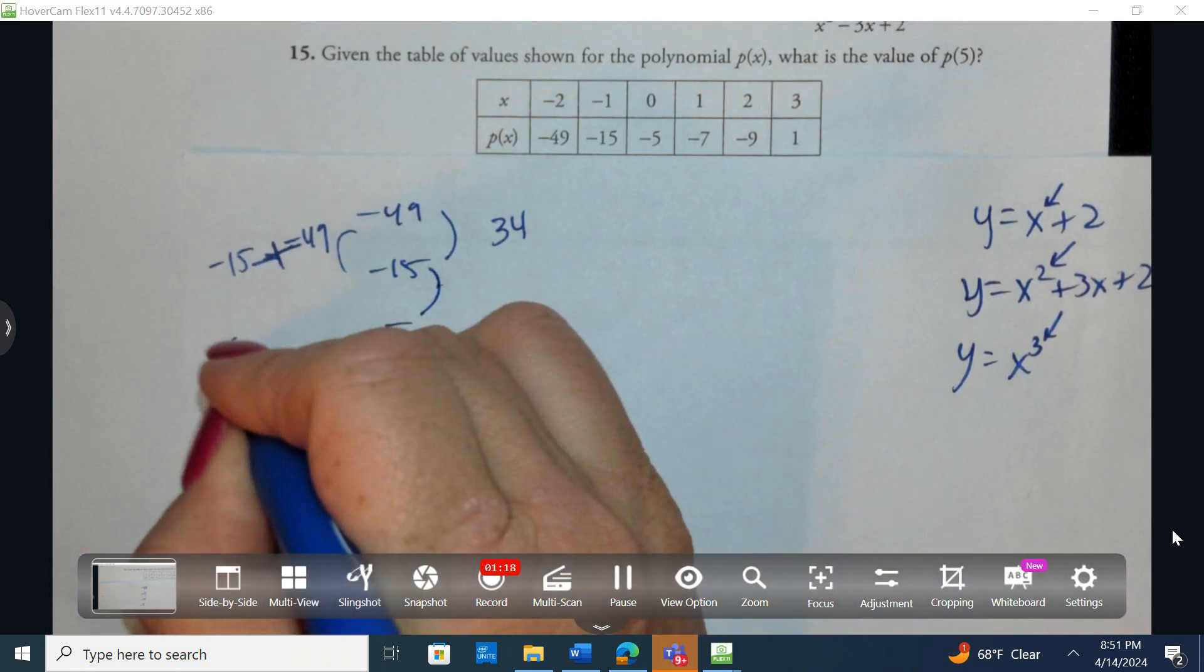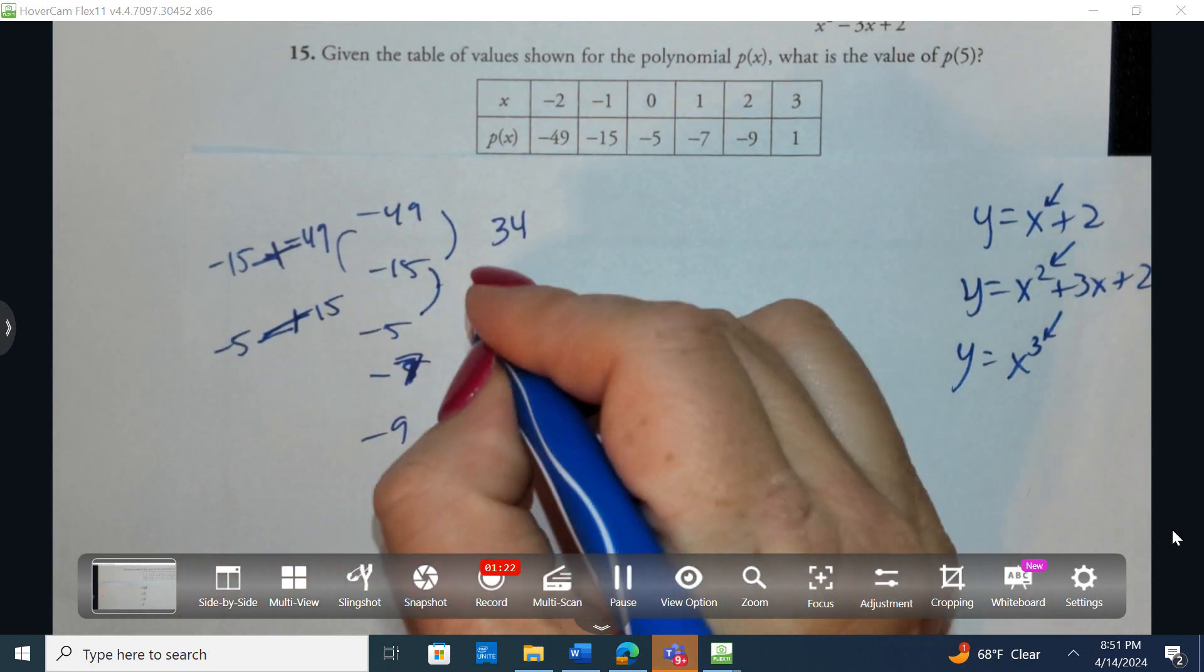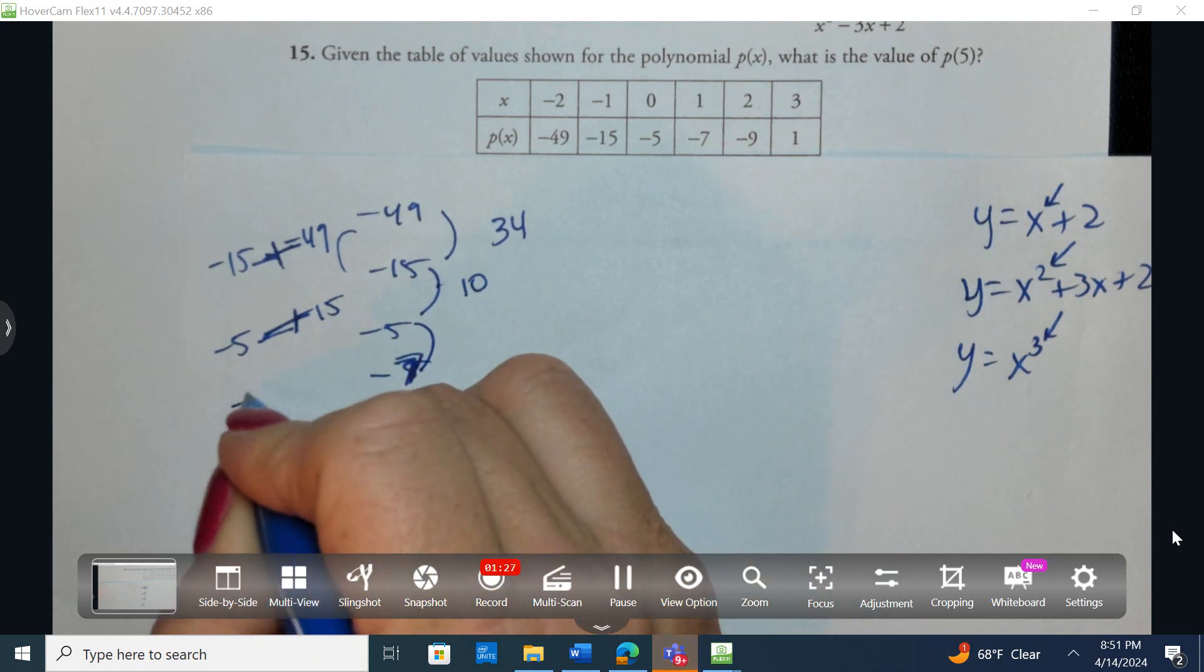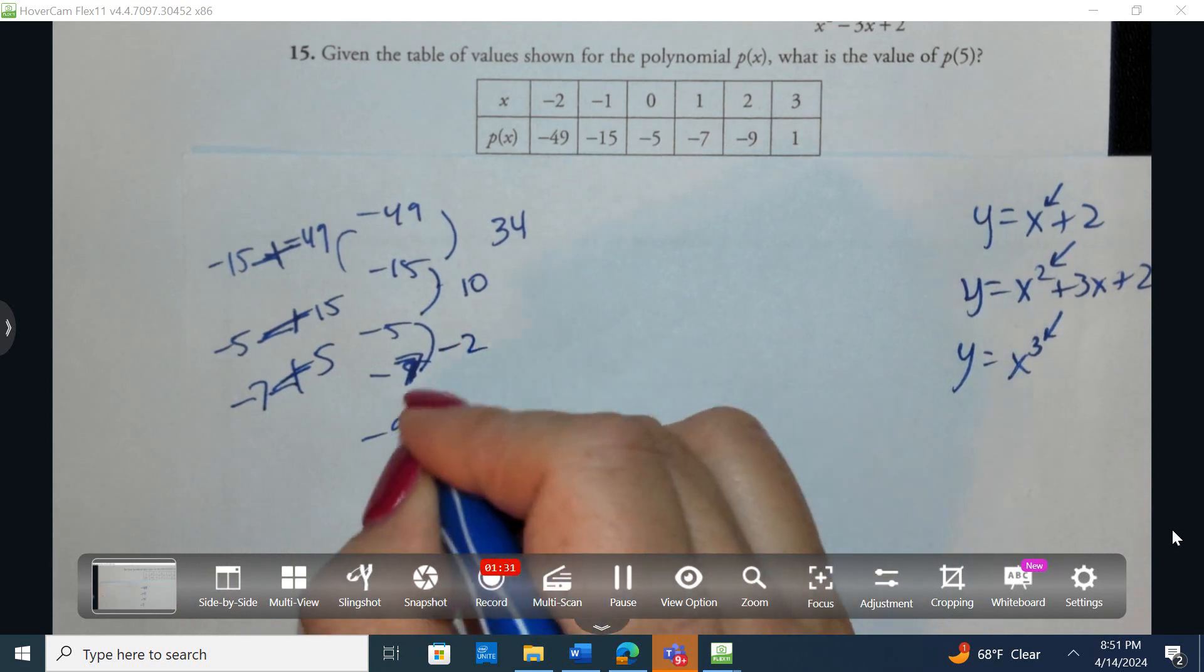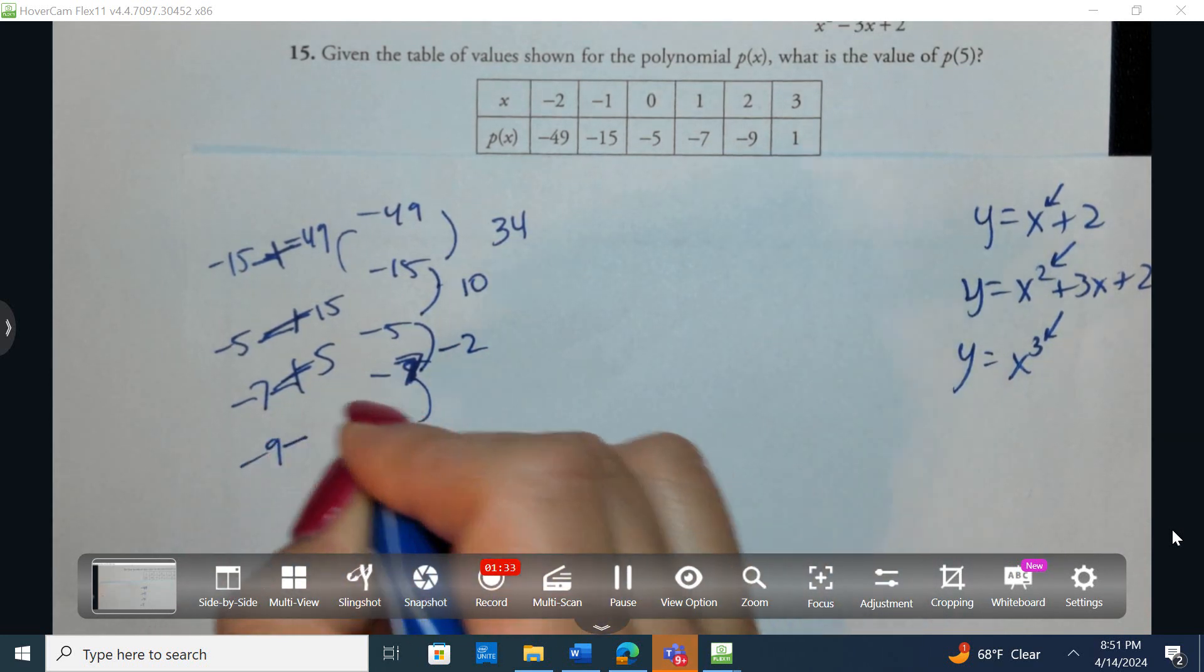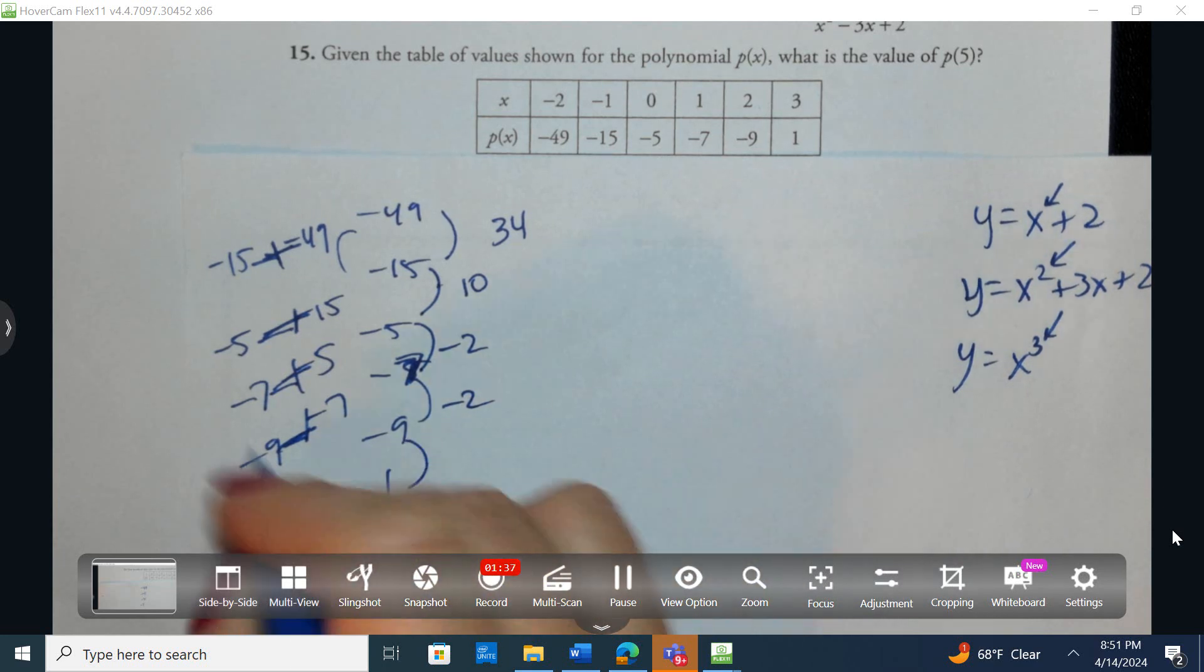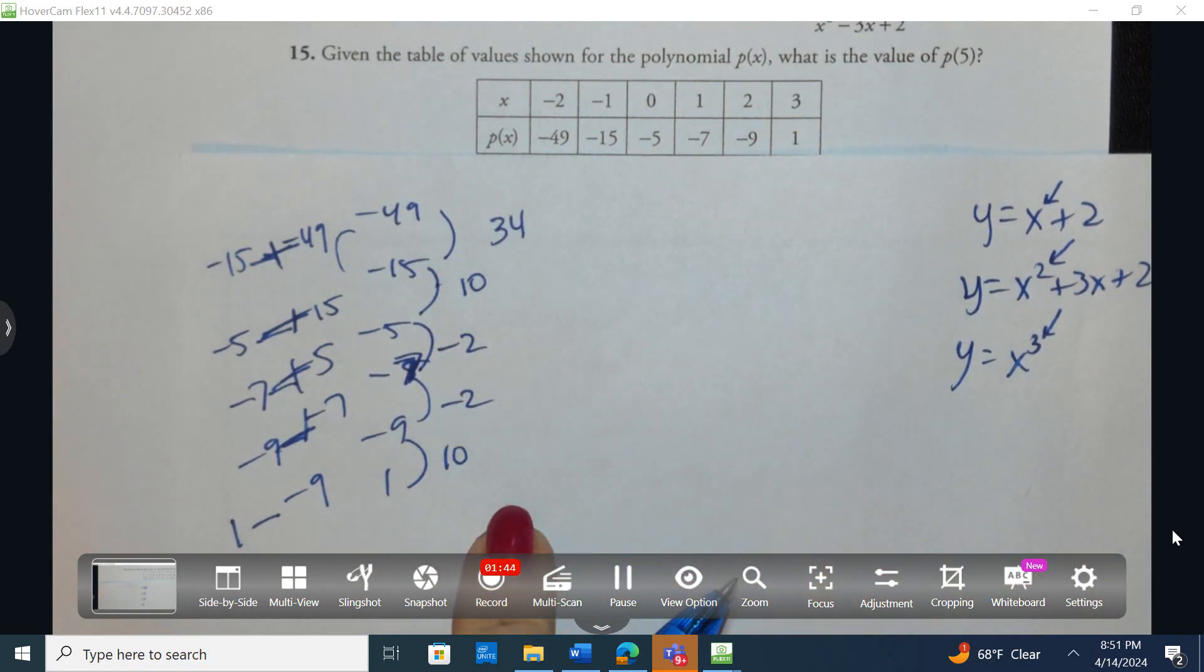Same thing here. I'm taking negative 5 subtracting negative 15, so negative 5 plus 15, I'm going up 10. Then I'm taking negative 7, subtracting negative 5, I'm going down 2. Negative 9 subtracting negative 7, going down 2. And 1 subtracting negative 9, I'm going up 10.